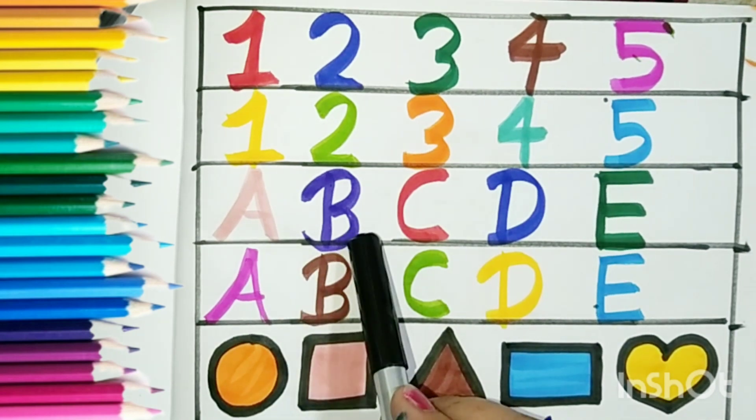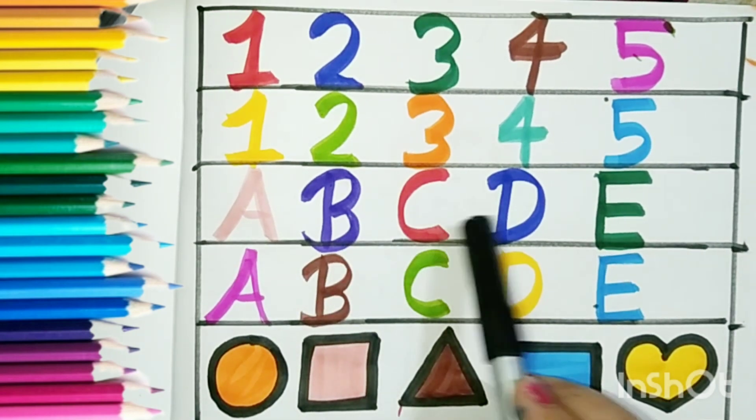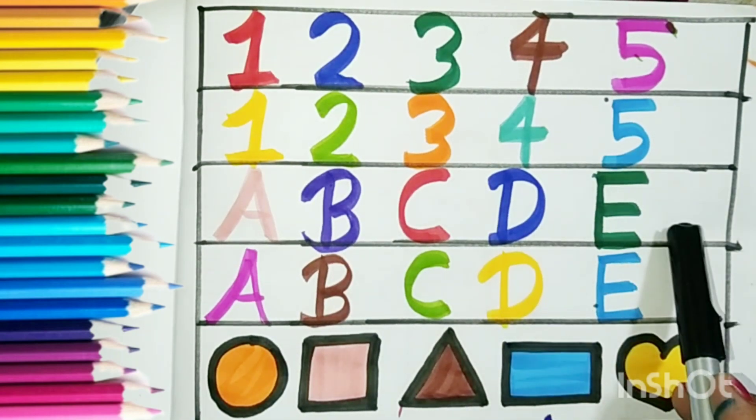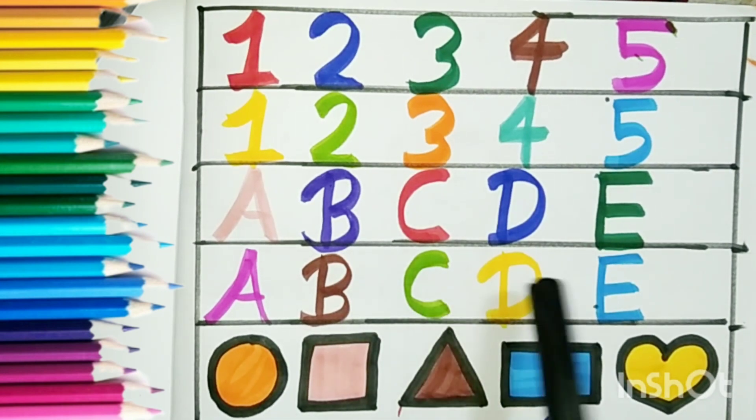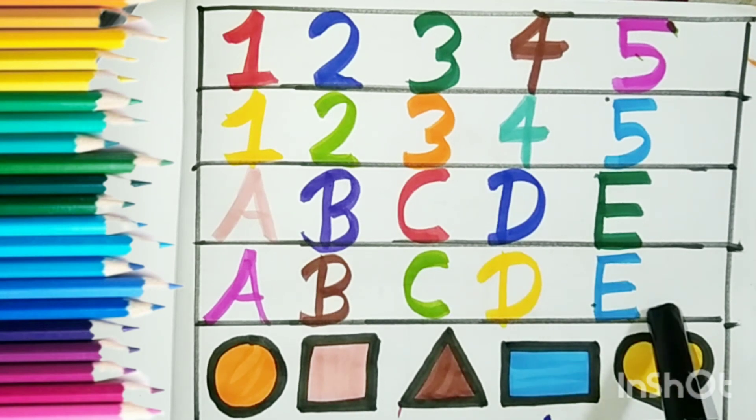A for apple. B for ball. C for cat. D for dog. E for elephant. A for apple. B for ball. C for cat. D for dog. E for elephant.